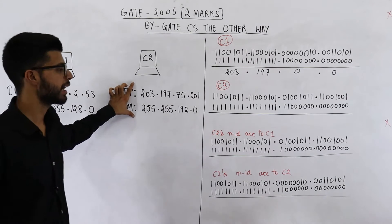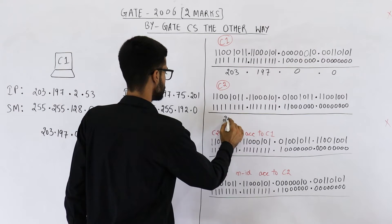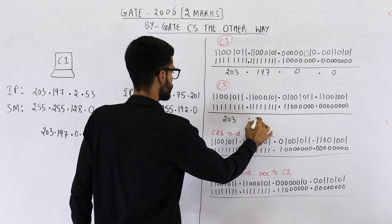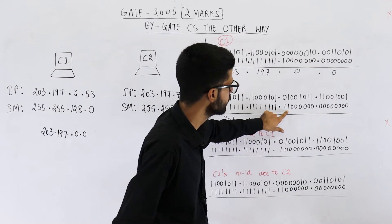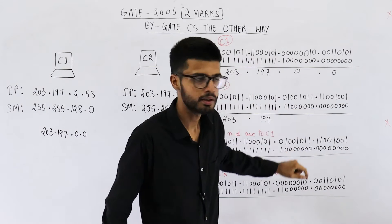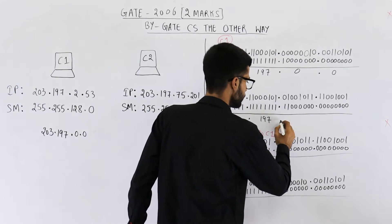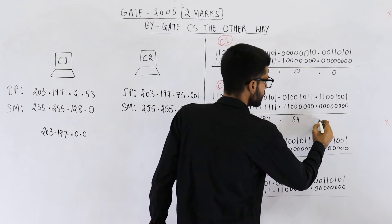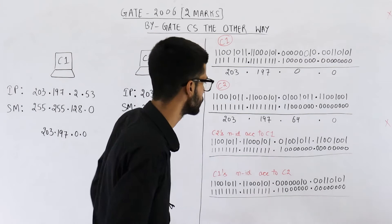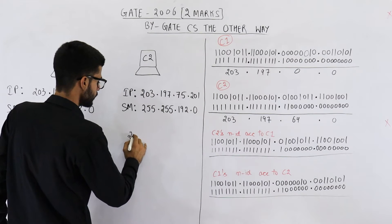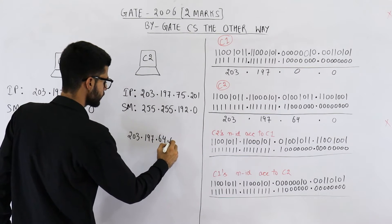Parallelly, let us find the network ID of C2. It will be 203.197.0... and in the third octet you get 0,1,0,0,0,0,0,0 — that is a 1 at 2 to the power 6, meaning the number will be 64. And the last octet gives all zeros, so decimal zero. So the network ID of C2 is 203.197.64.0.